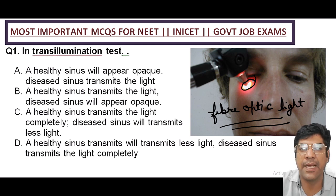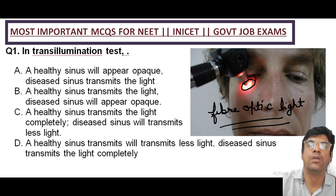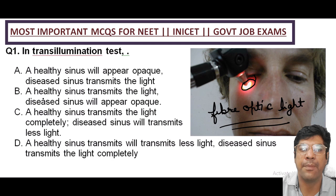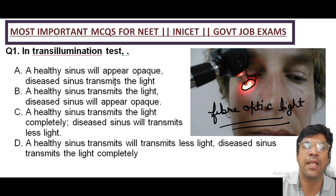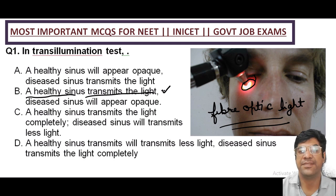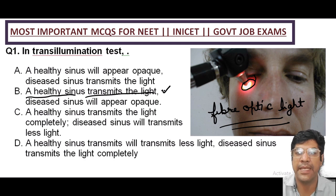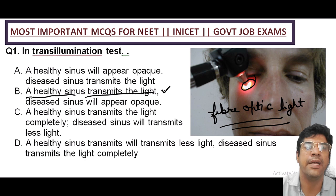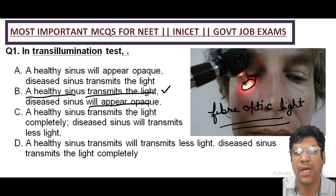The focused light ensures the transmitted light is more concentrated and directed. If the sinus is healthy and contains normal cells, it will allow light to pass through, making the area appear illuminated or translucent. However, if the sinus is diseased, blocked, or filled with abnormal materials like pus or mucus, it will not allow light to pass through and will appear opaque. Answer B is correct.